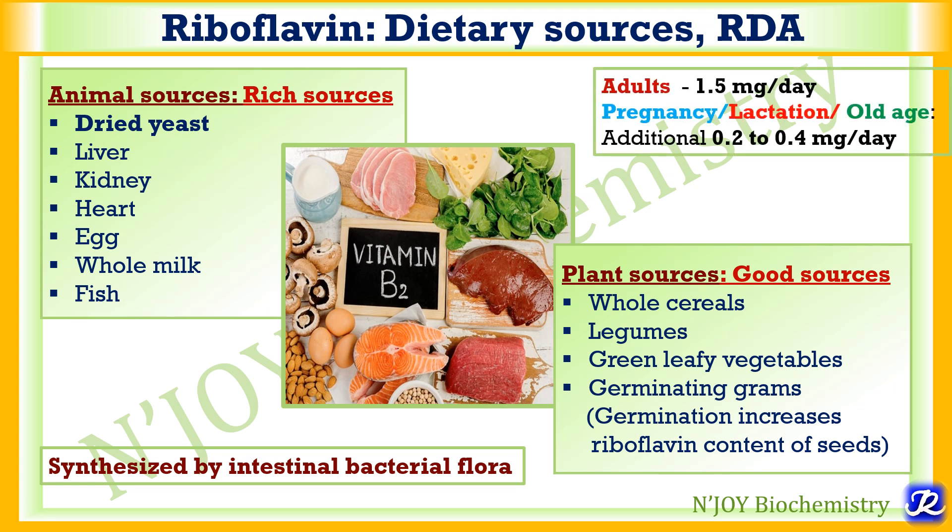The RDA in adults is 1.5 mg per day. In pregnancy, lactation, and old age, an additional 0.2 to 0.4 mg per day is required in addition to the adult requirement.